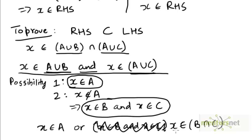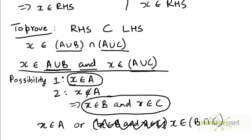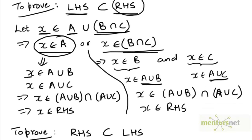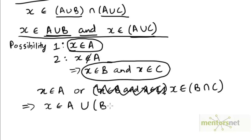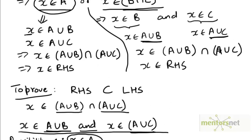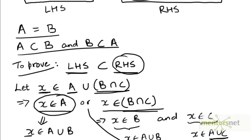So if x belongs to A, or x belongs to B intersection C, it must belong to A union B intersection C — it must belong to their union. We have proven that the arbitrary element x drawn from the set on the right-hand side is also an element of the set on the left-hand side, so the right-hand side is a subset of the left-hand side. Combining this with the result that the left-hand side is a subset of the right-hand side, we have proven that the two sets are actually equal.